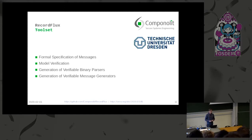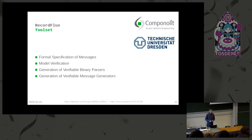All code generated by RecordFlux is Spark code. So we can automatically prove that there are no runtime errors in the code. Another feature is that we can statically ensure only valid messages are accepted and processed, and in the same way only valid messages can be generated. The source code of RecordFlux is available on GitHub along with documentation. If you're interested in the theoretical side, you can also look at the research paper.